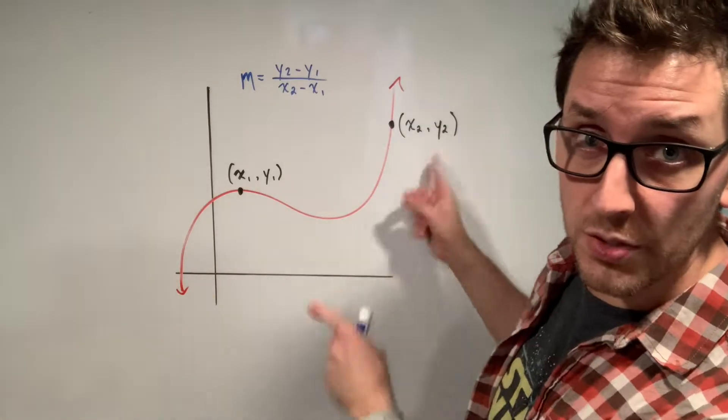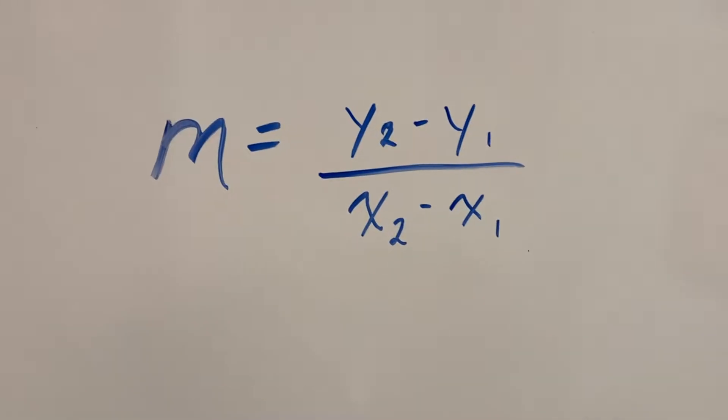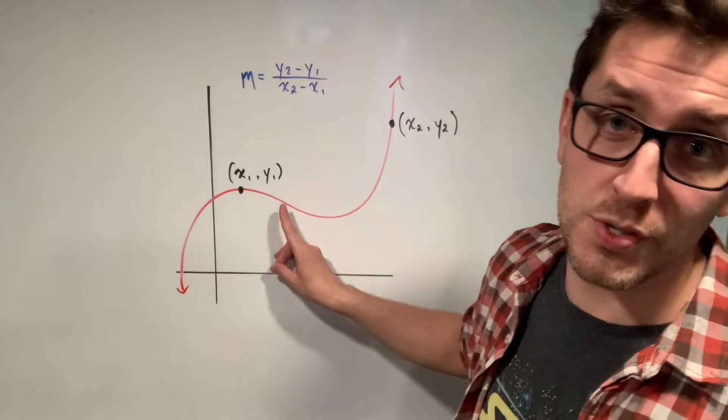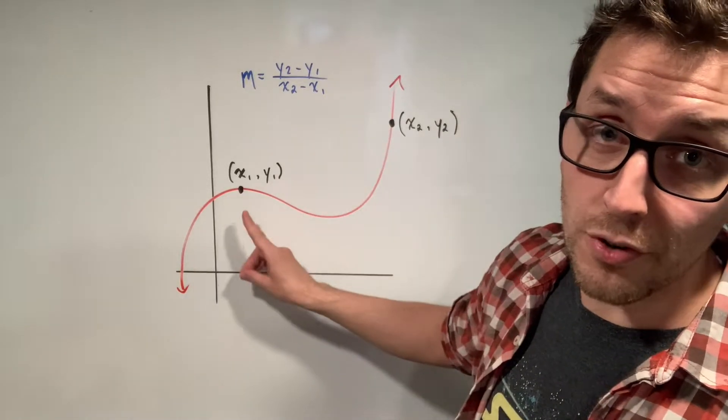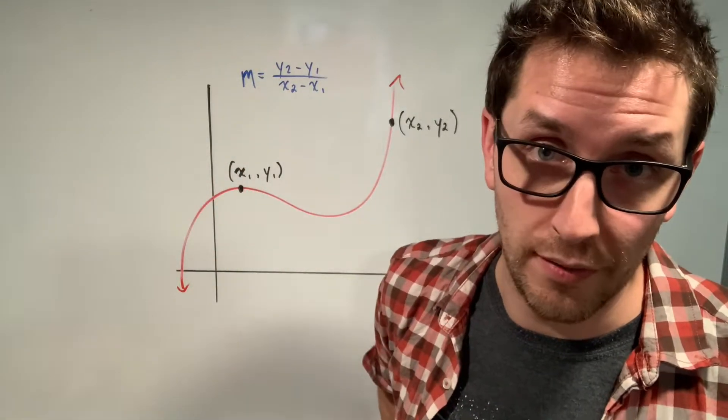Now, if you wanted to find the slope between these two points, all you'd have to do is apply the slope formula that you are super comfortable with. We take the second y value, we subtract the first y value, and then we divide by the second x value minus the first x value. But you already know that, don't you? So how does this all relate to the first principle's definition of the derivative?